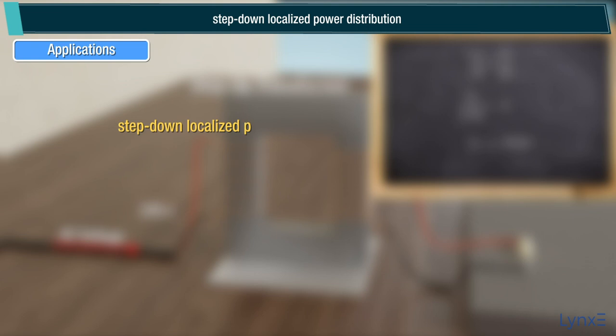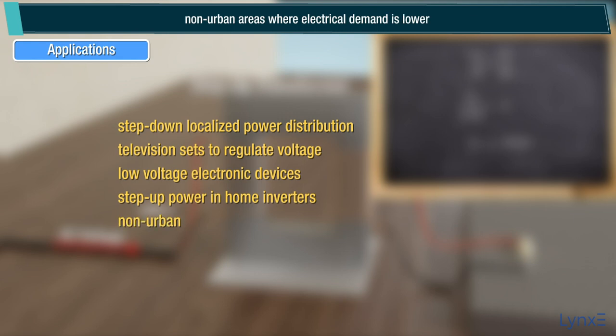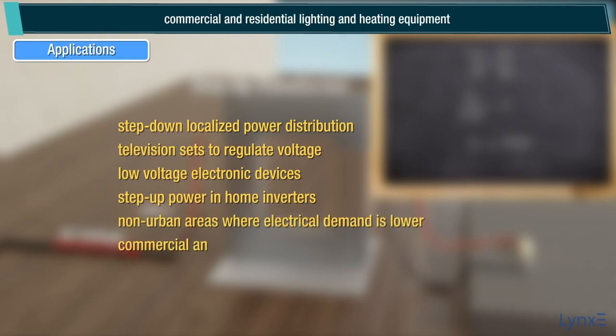Step down: localized power distribution, television sets to regulate voltage, low voltage electronic devices. Step up: power in home inverters, non-urban areas where electrical demand is lower, commercial and residential lighting and heating equipment.